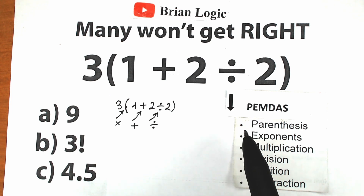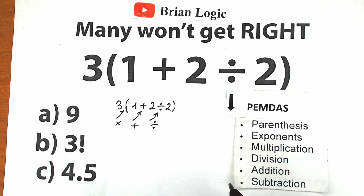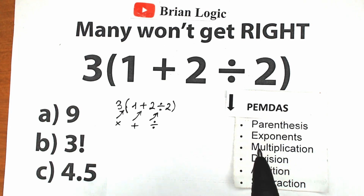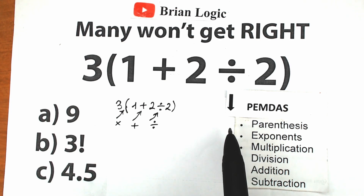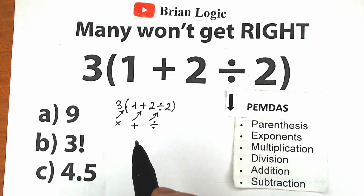First we should evaluate the expression inside parentheses. Next we evaluate Exponents. Then we evaluate the Multiplication and Division group. And the last step is the Addition and Subtraction group. So Parentheses has the highest priority, and Addition and Subtraction have the lowest priority.